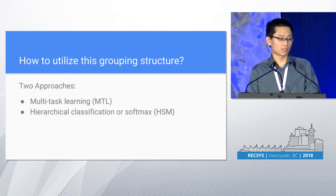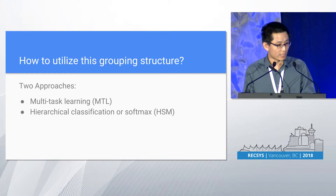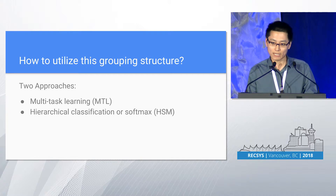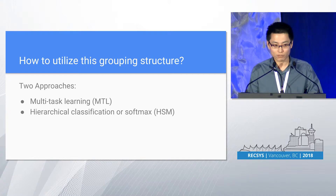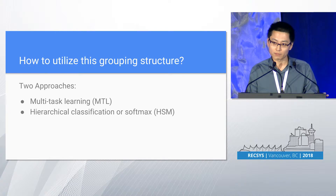We explored two approaches — multitask learning and hierarchical softmax — to utilize this grouping structure. In the multitask learning case, we have two parallel tasks: we not only predict the item, but also predict the associated topic or group of that item. So we have two losses: item-level softmax loss and topic-level softmax loss.